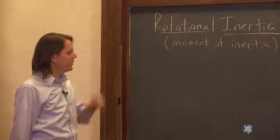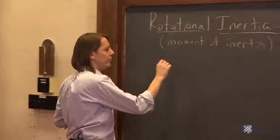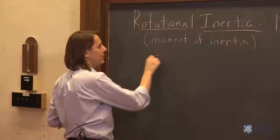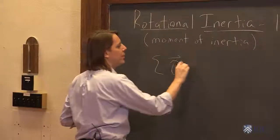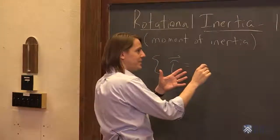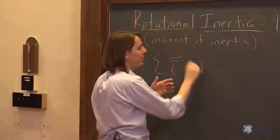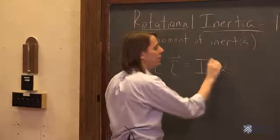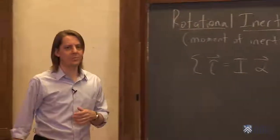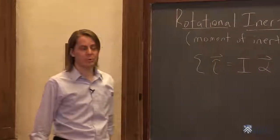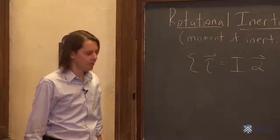It shows up in what is essentially Newton's second law for rotation, that the sum of all the torques on an object equals this thing that resists motion. We label it I times the angular acceleration of the object. So I is the rotational inertia, the moment of inertia.